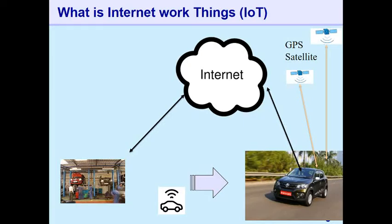In today's world without the internet, you would have to call the mechanic yourself, struggle to describe your location in a panic, and wait. With IoT, before the car breaks down, the on-board computer detects the issue and informs the mechanic through the internet. The car, the mechanic, and the dispatch vehicle are all connected to the internet. This is a classic example of an IoT application or IoT use case.